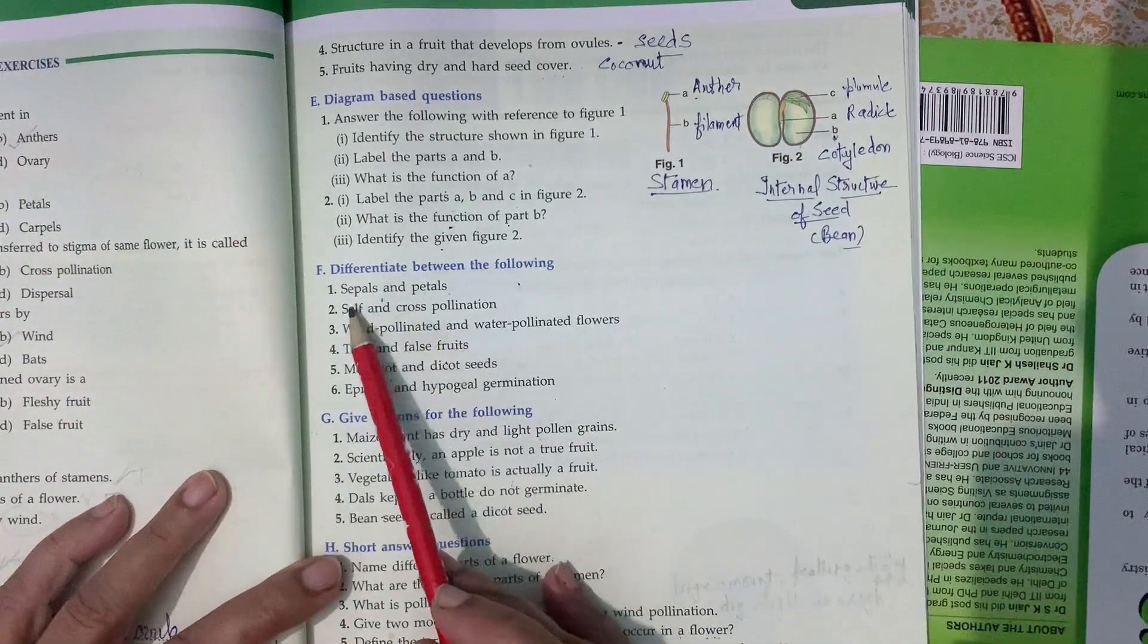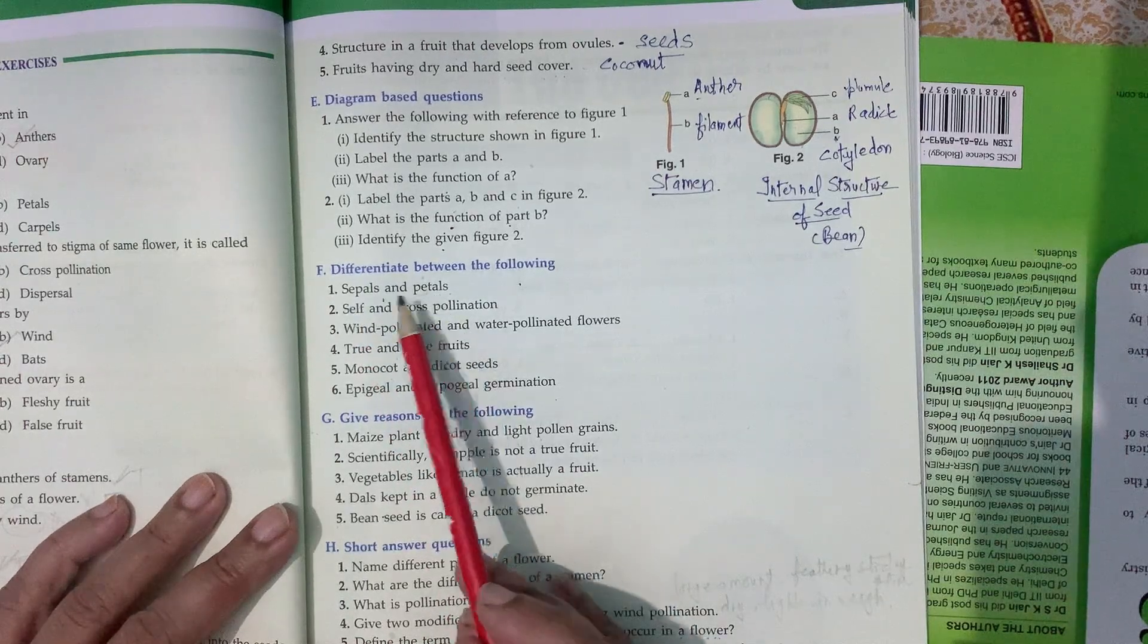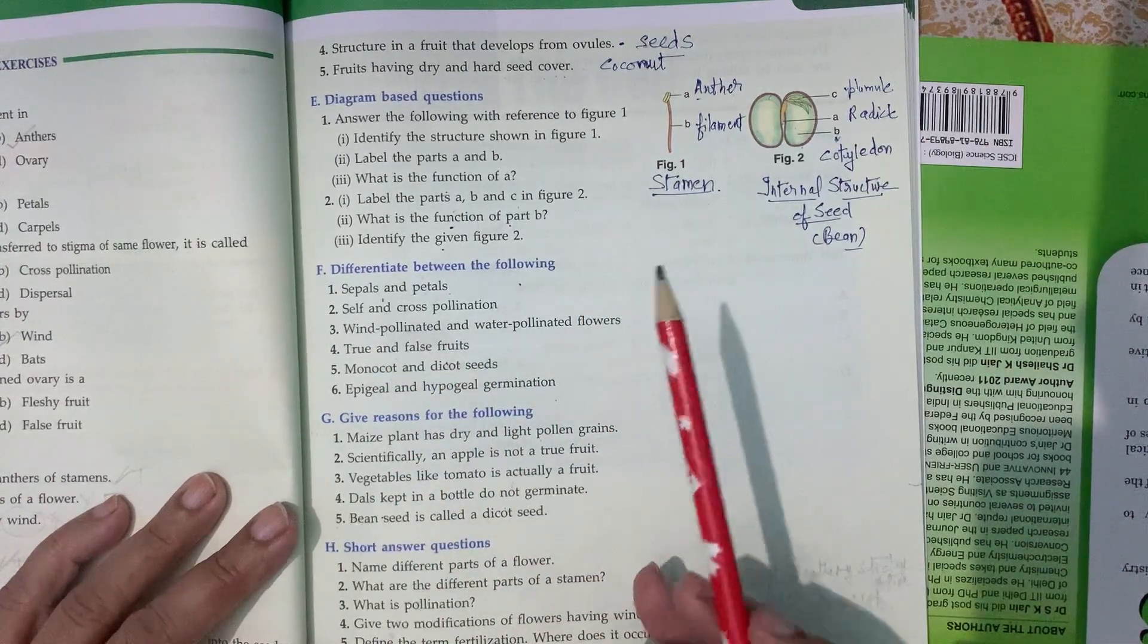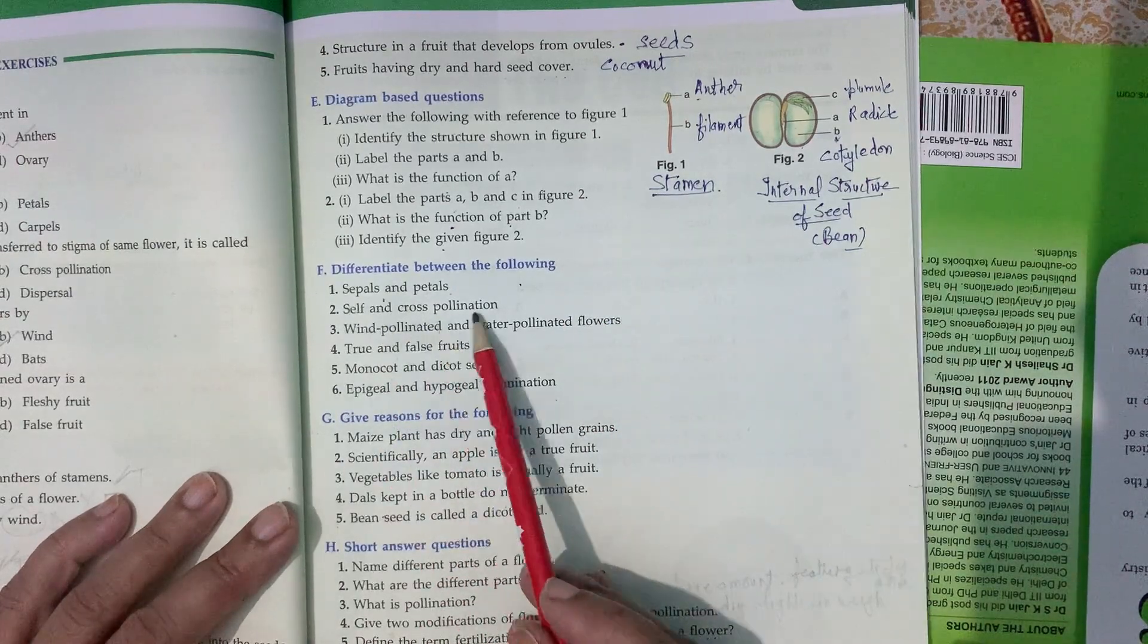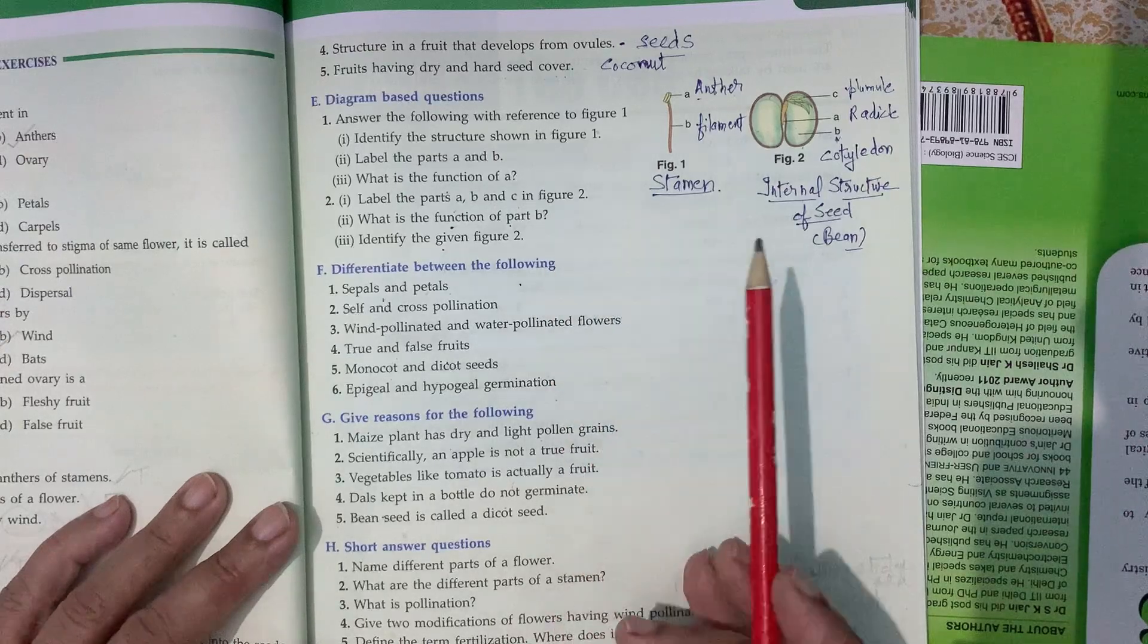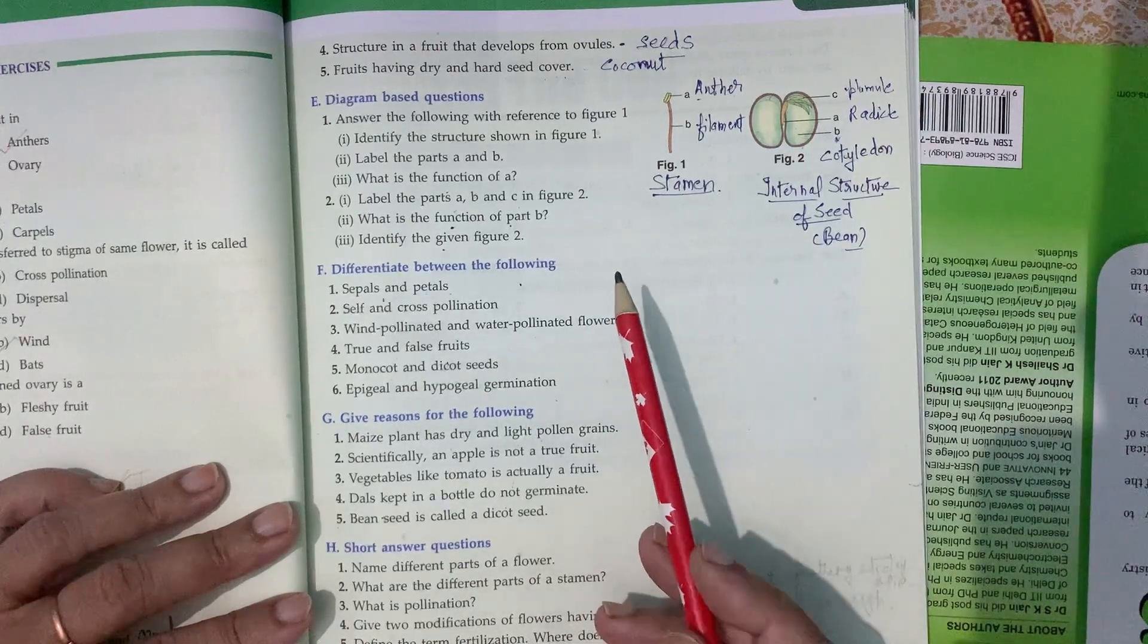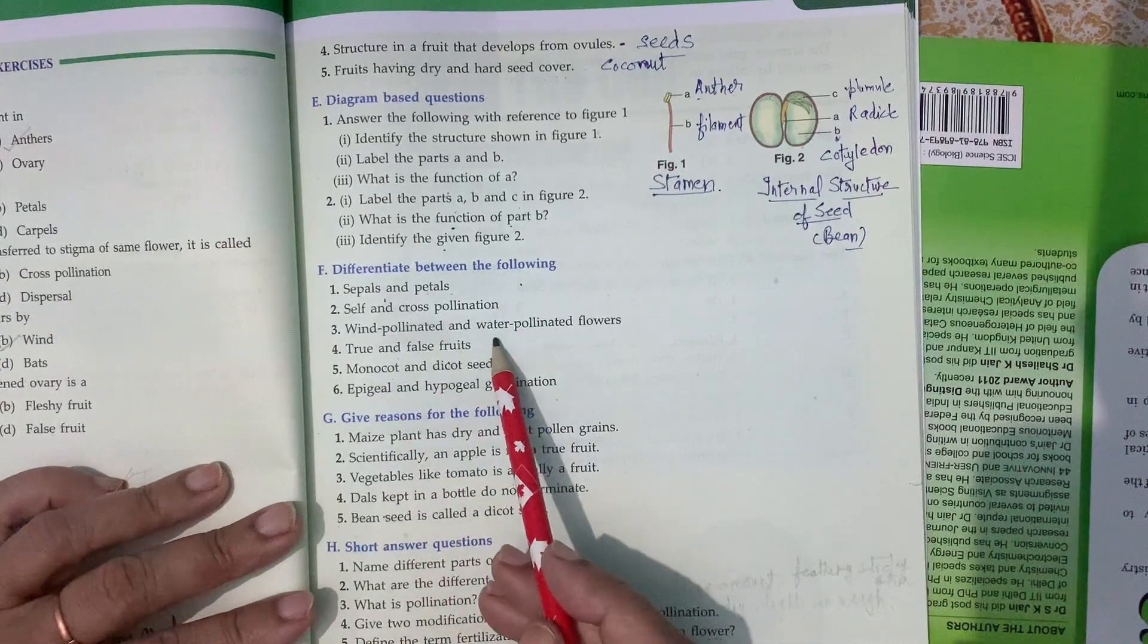Now, differentiate sepals and petals. Sepal is the outermost whorl of the flower, also known as calyx, and they are green in color. Petal is the second whorl, known as corolla, and they are variously colored. Self-pollination is transfer of pollen grains from anther to stigma of the same flower or same plant. Cross-pollination is transfer of pollen grains from anther to stigma from one plant to another plant of the same species.